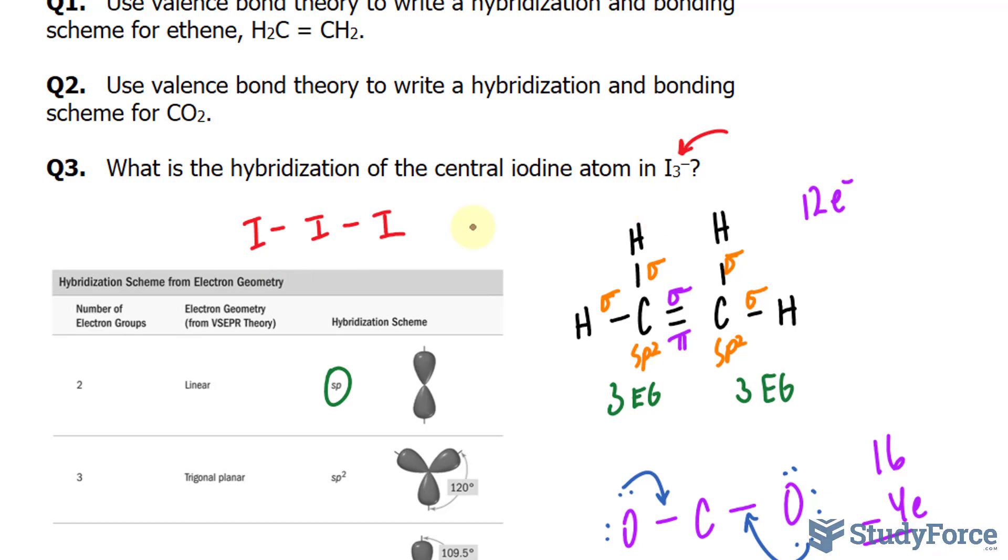The Lewis structure will look like this, where we have iodine bonded to iodine bonded to the third one. We've already used four electrons, and the valence of iodine is seven. Seven times three is 21, plus an extra electron that makes 22. 22 minus four is 18. So we have 18 electrons to spread around here. Another six here, that makes 12, and six more.